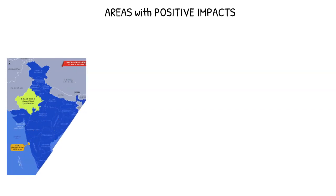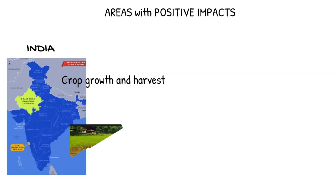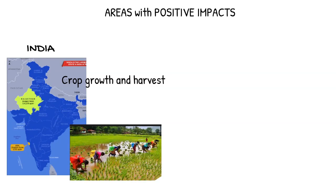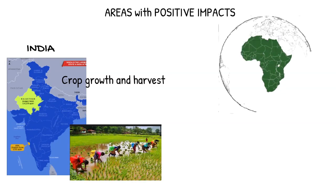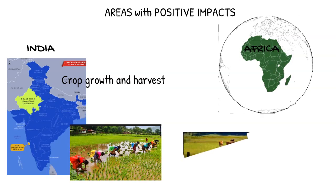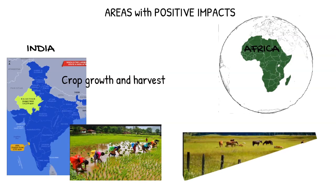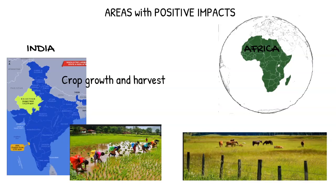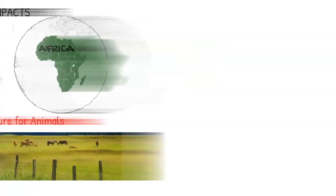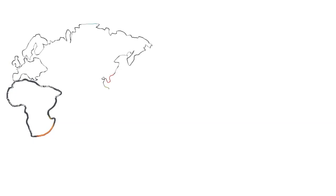In some areas of the world, La Niña has positive impacts. For example, India experiences more rainfall that is evenly distributed across the country, boosting crop growth and harvest. Above-average rainfall in South Africa, Sudan, and Eastern Africa during a La Niña event generates pasture for animals.